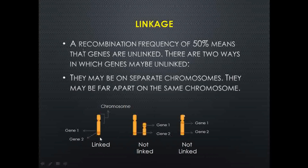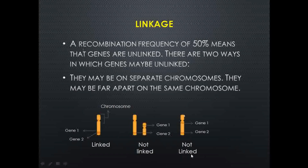In another condition, two chromosomes are shown and genes found on different chromosomes are highlighted — these are not linked type of genes because they are present on different chromosomes. In yet another condition, one chromosome has two genes, gene one and gene two, but they are not completely linked because they are located far apart on the same chromosome.